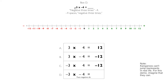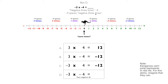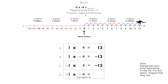Last one, box D: negative three times negative four, pronounced 'negative three times negative four.' So jump negative four spaces negative three times. We'll start at zero. And once again, we're not jumping negative four spaces three times — we're jumping negative four spaces negative three times. So the kangaroo won't be jumping forwards; she'll be jumping backwards. Visualize where the kangaroo will end up. Negative four spaces negative one time, negative four spaces negative two times, negative four spaces negative three times. Negative three times negative four equals twelve. Write it down.